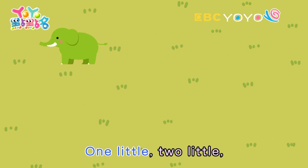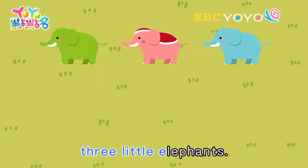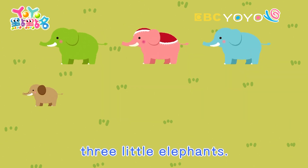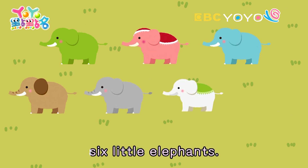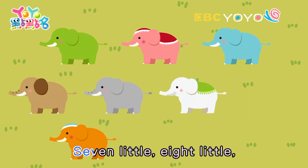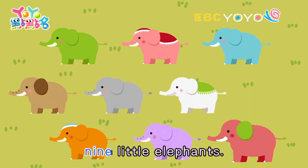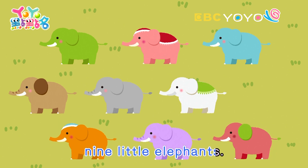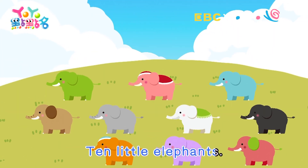One little, two little, three little elephants. Four little, five little, six little elephants. Seven little, eight little, nine little elephants. Ten little elephants.